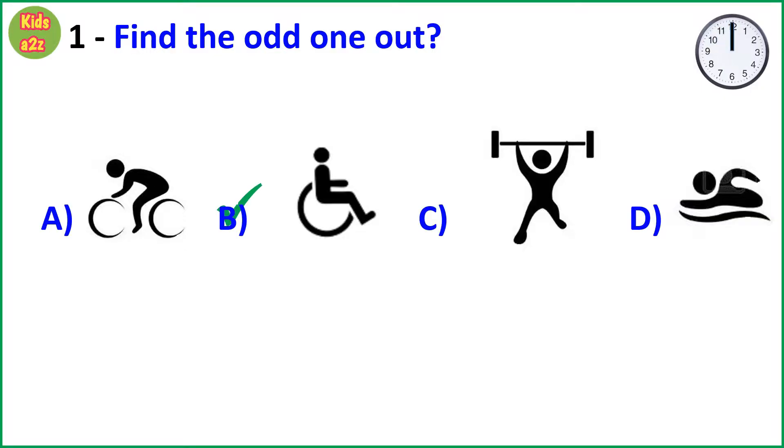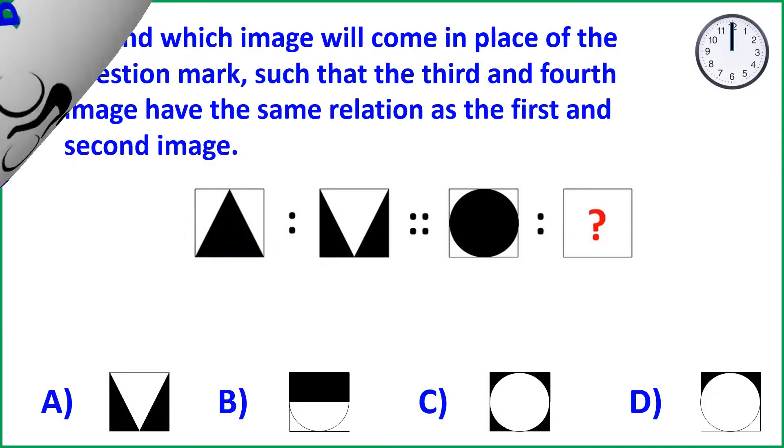Answer is Option B. Because cycling, weightlifting and swimming are types of sports, and the second option is a symbol for handicapped people.